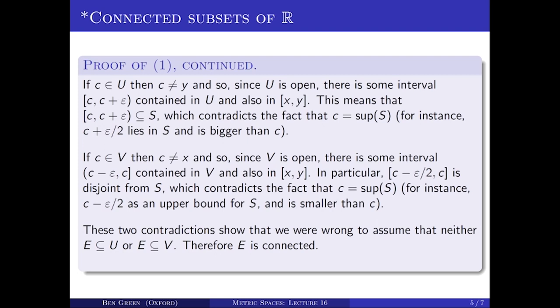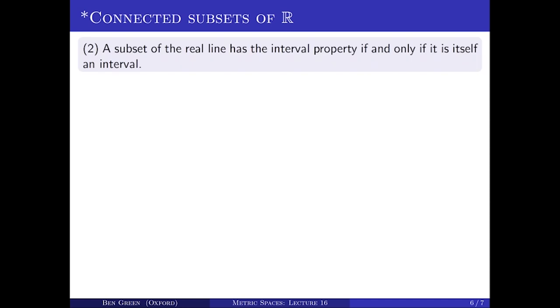So we've shown that a set E of real numbers is connected if and only if it has the interval property. To complete the classification of connected subsets of the reals, I need to prove statement 2: a subset of the reals has the interval property if and only if it is itself an interval.